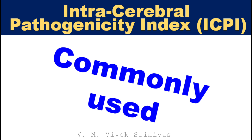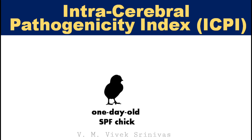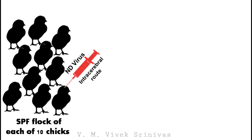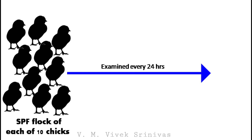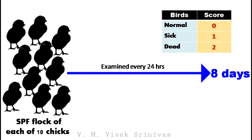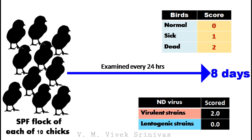Intracerebral pathogenicity index — the most commonly used method. The virus is injected intracerebrally into a day-old specific pathogen-free chick. Each virus is injected into a flock of 10 SPF chicks. After injection, birds are examined every 24 hours for 8 days, then the birds are scored: 0 if the bird is normal, 1 if sick, and 2 if dead. Generally the virulent viruses will score 2, whereas the lentogenic strains will get a score close to 0.